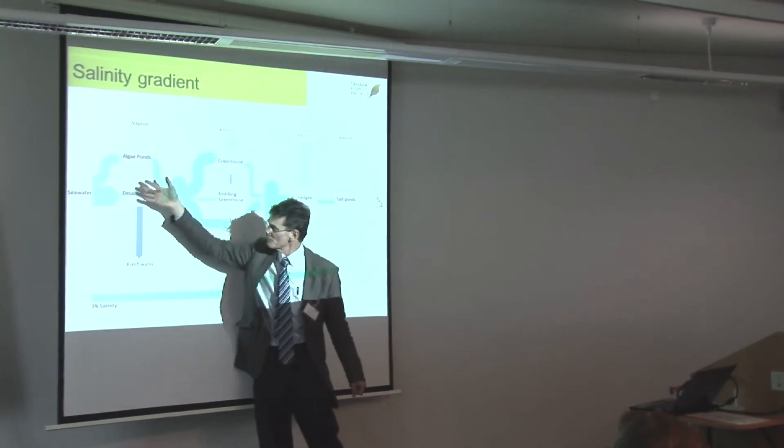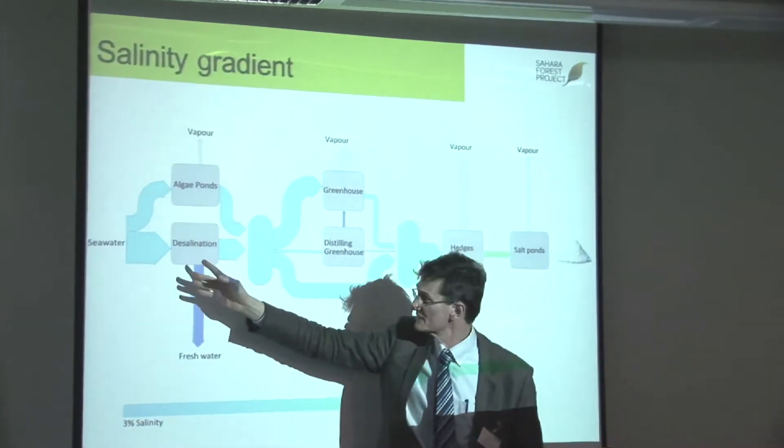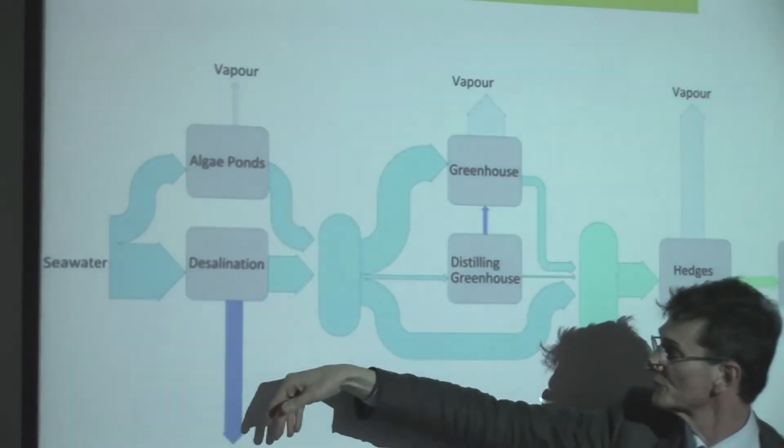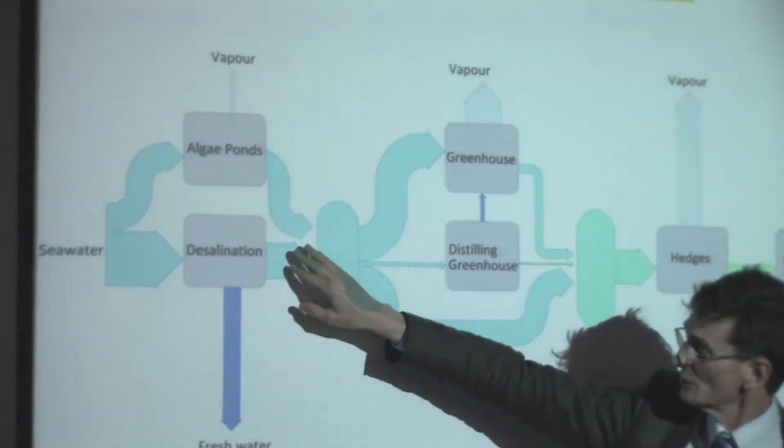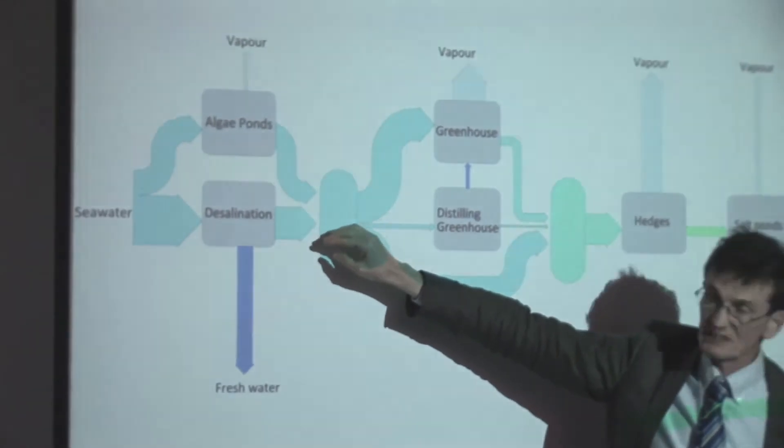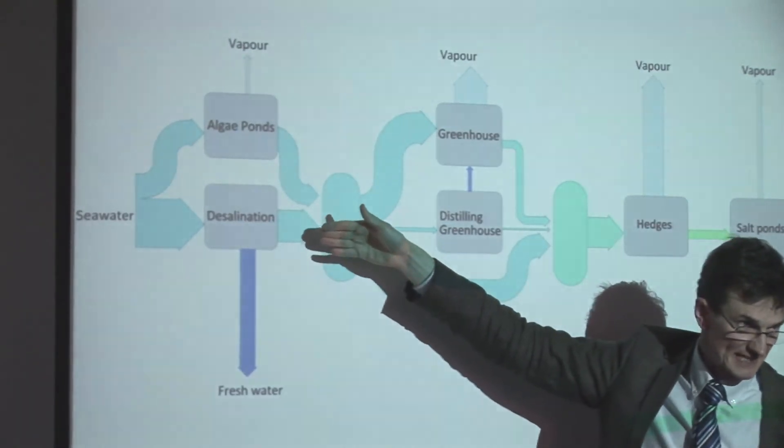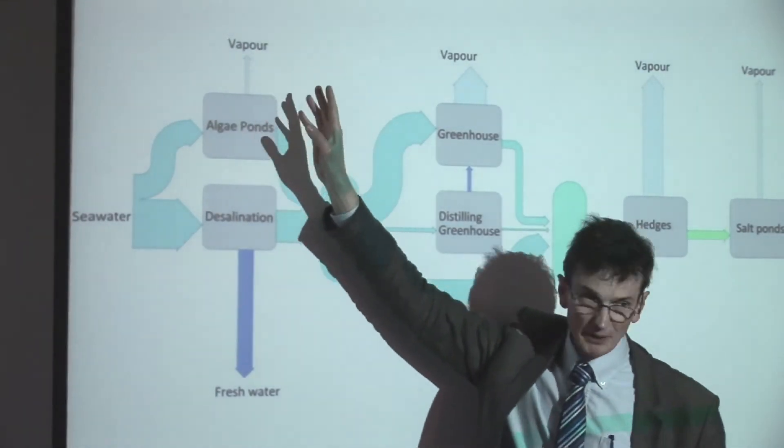This is a particular arrangement working down the gradient here. We've got the first dibs on the seawater. At its lowest salinity, it's for desalination. And out of that, you get fresh water. But what you get is a more concentrated salt solution with brine in it.